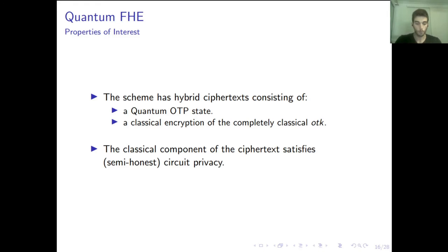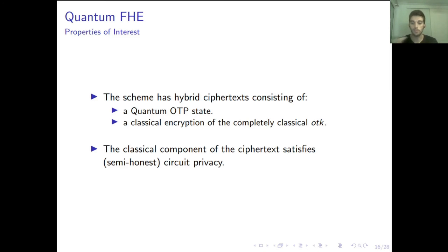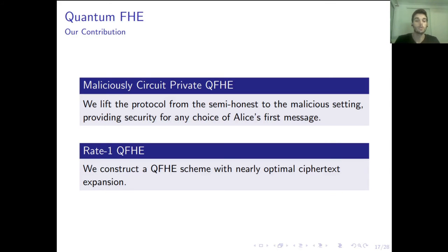In our constructions, the properties of interest to us are that the scheme has this hybrid ciphertext consisting of the quantum part — the quantum one-time padded message — and the classical part, which is a classical encryption of the quantum one-time pad keys. We also use that the classical component of the ciphertext — the classical FHE — satisfies the same circuit privacy notion. By using these properties, and for any quantum FHE with these properties, we lift the protocol from semi-honest security to maliciously private security, and we also construct a rate-1 quantum FHE.